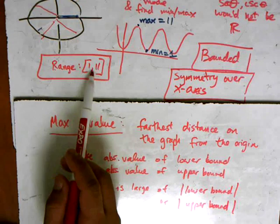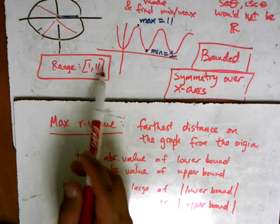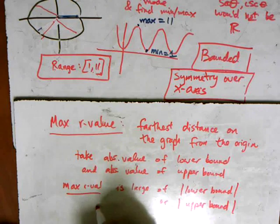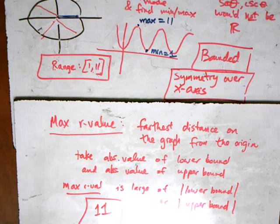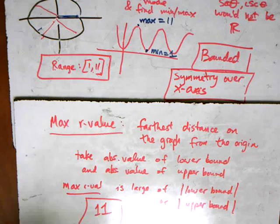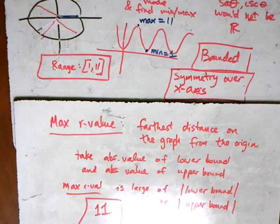So in this case, absolute value of 1, absolute value of 11, 11 is bigger. So 11 is the max r-value. And it just represents how far away from the origin can we possibly get.